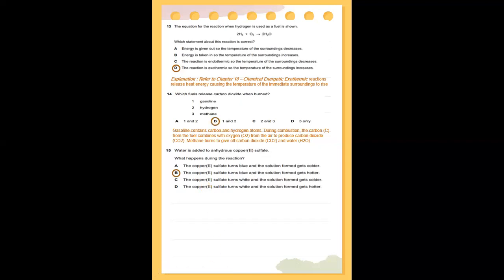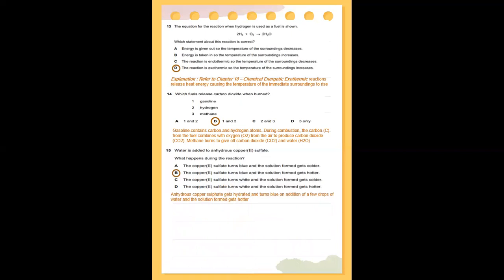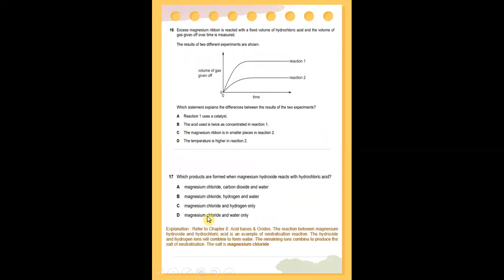Number 14: which fuel releases carbon dioxide when burning? Gasoline contains carbon and hydrogen atoms. During combustion, the carbon from the fuel combines with oxygen from the air to produce carbon dioxide. Methane also burns to give off carbon dioxide and water. So, the answer is 1 and 3, which is D. And, water is added to anhydrous copper sulfate. What happens? The copper sulfate turns blue and the solution formed gets hotter.